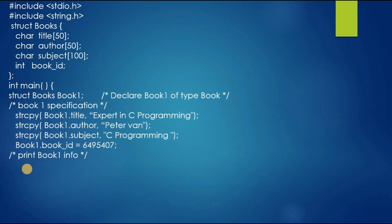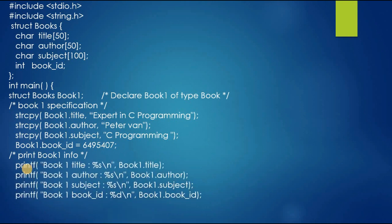Then after specifying the book1 information we have to display it. So we give a printf statement for title, author, subject, and book id. In the printf statement we will print book1 title, author, subject, and book id.